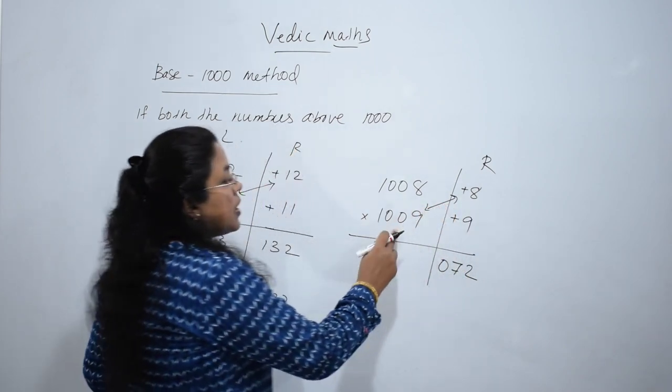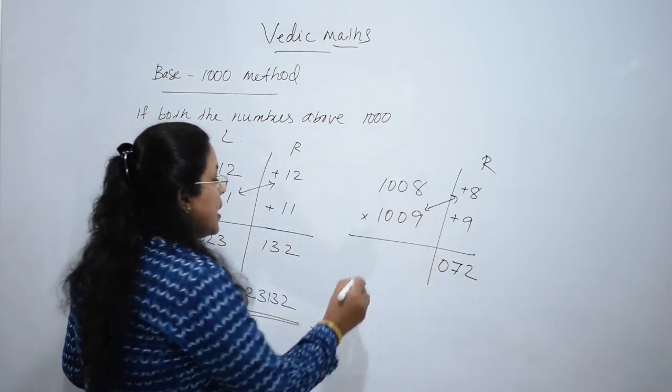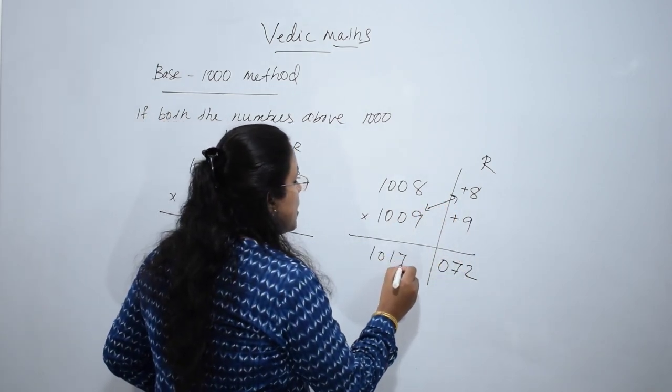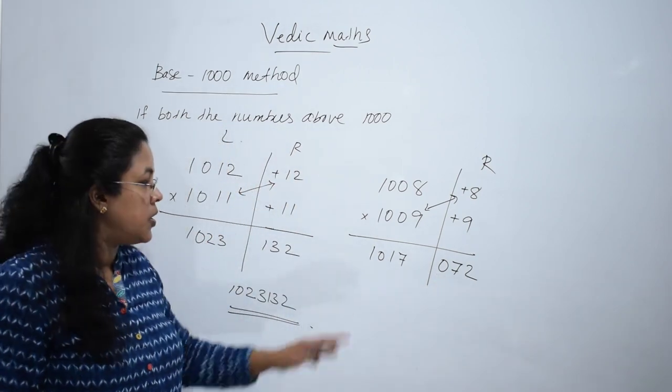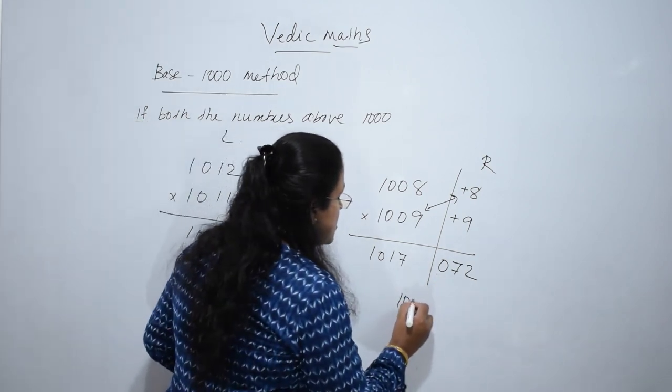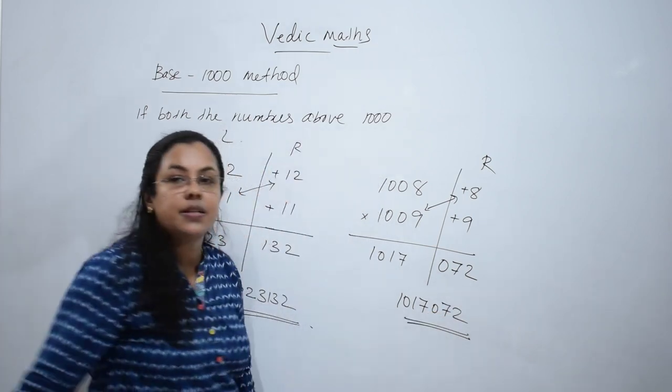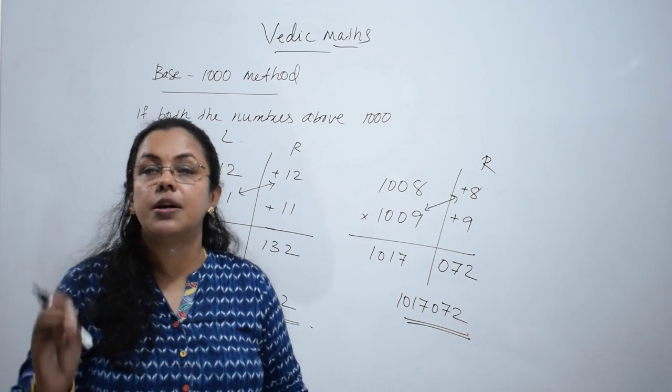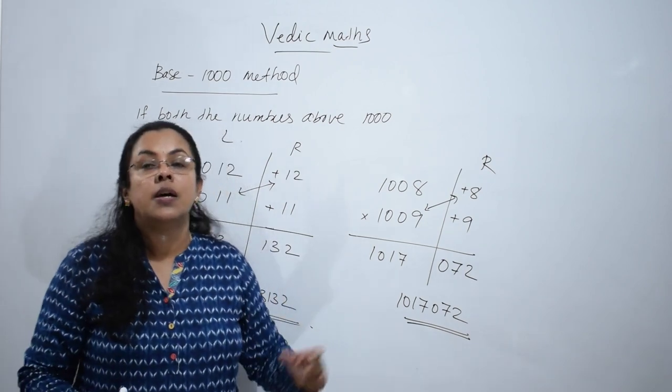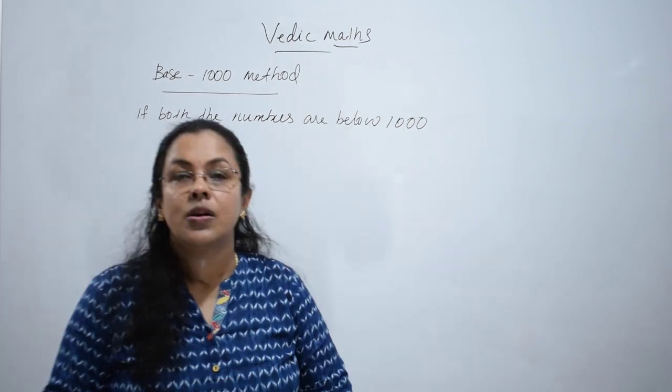What is the next step? Add diagonally. 1009 plus 8 is 1017. So the final answer is 1017072. Isn't it easy? Base method is very easy. If 2 numbers are near to 1000, base method is easy.